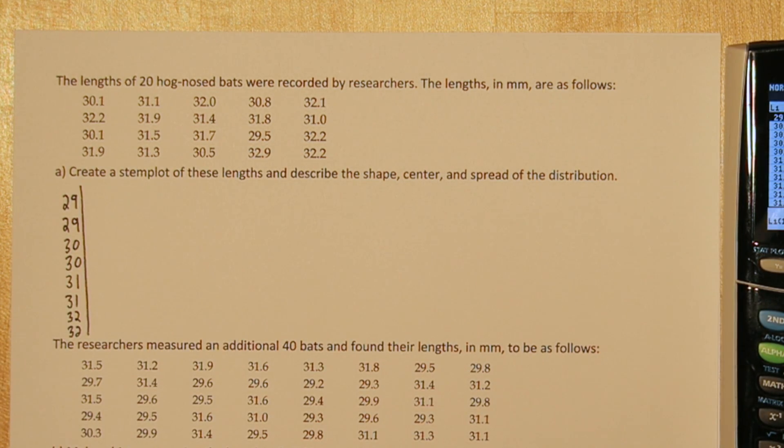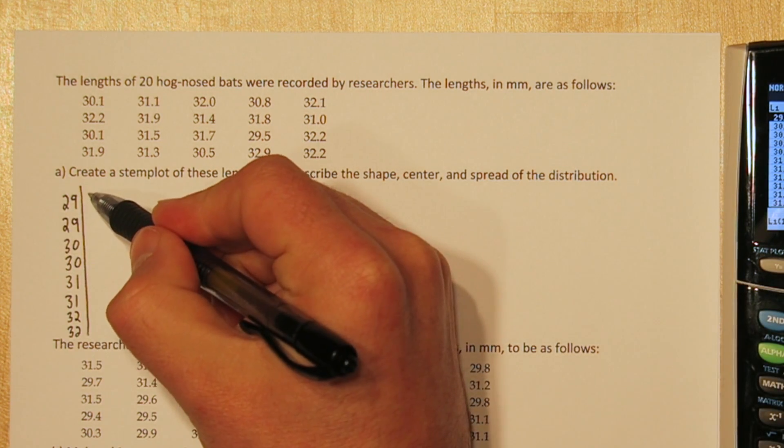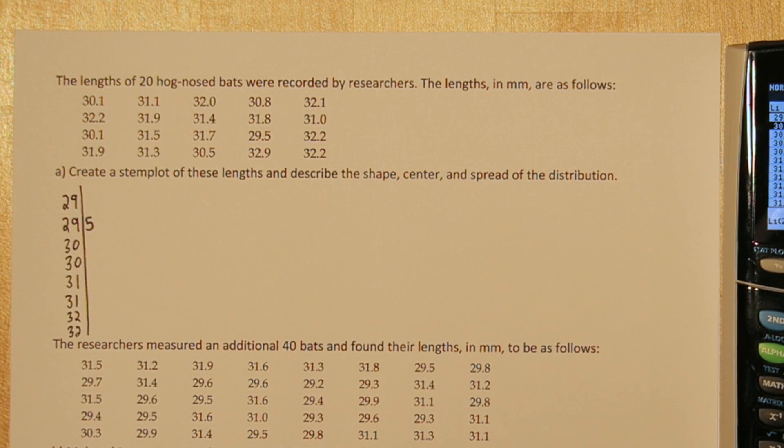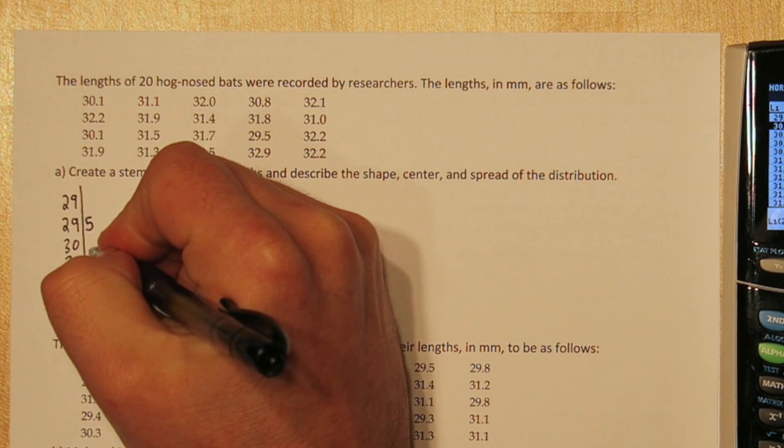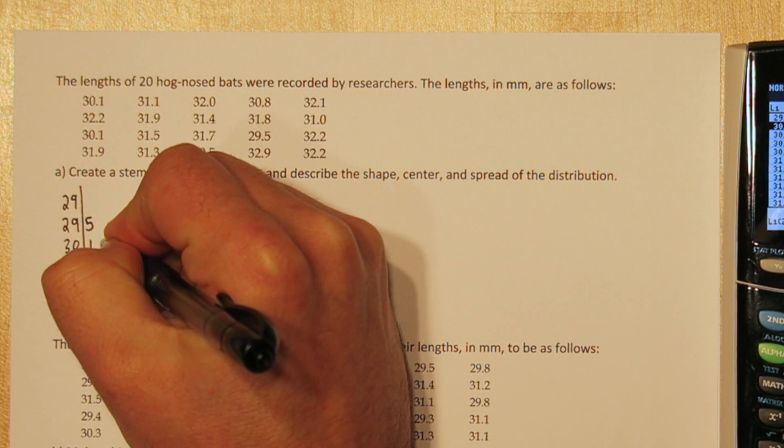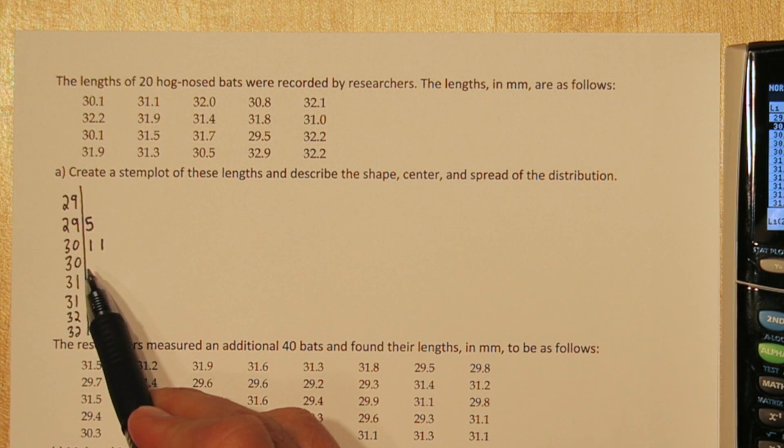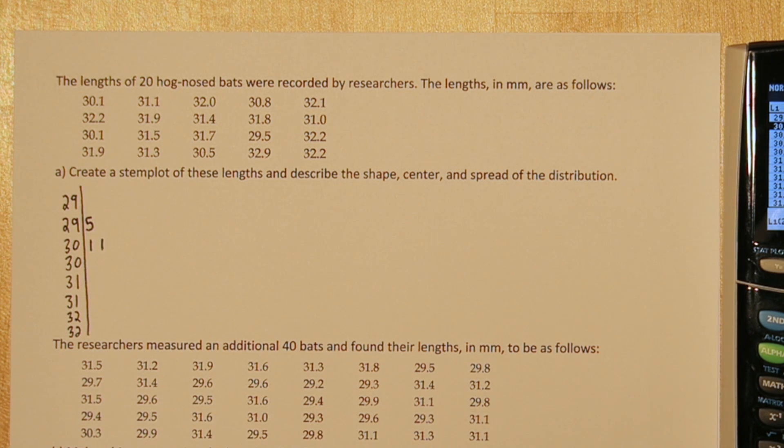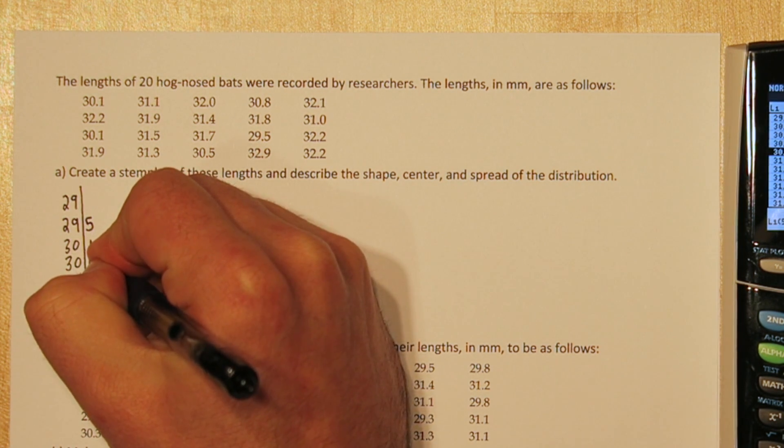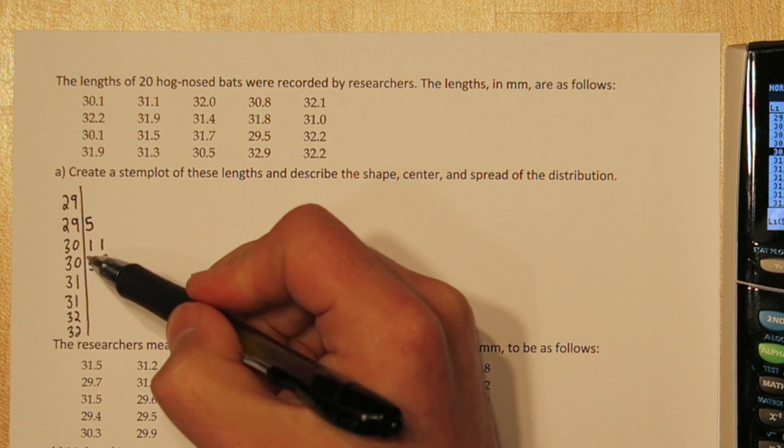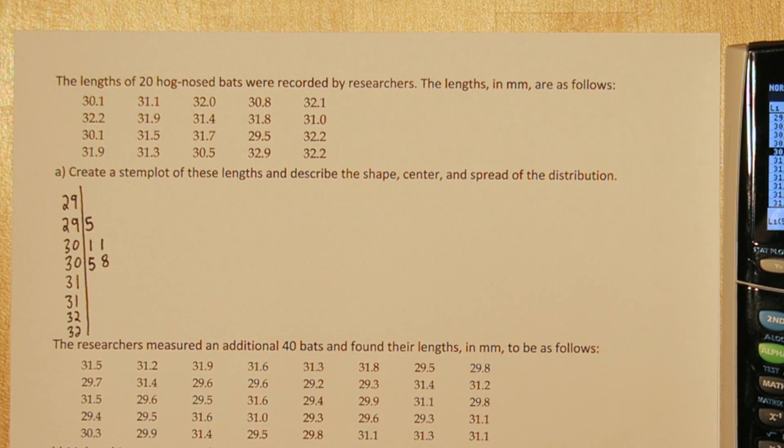Now looking at our data, our lowest value is 29.5. That doesn't go in the first 29, but in the second one. Now our next value is 30.1, and we actually have two of those. So in the first 30 stem, we're going to put our two ones. Be really careful about your spacing. Sometimes, especially with ones, you put them really close together, and that can mess up your stem plot. The next value is 30.5, and then a 30.8. Both of those go into the second 30 stem.